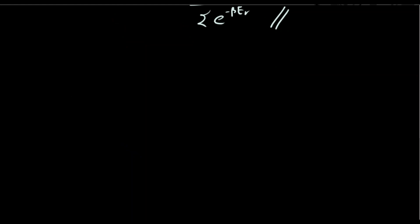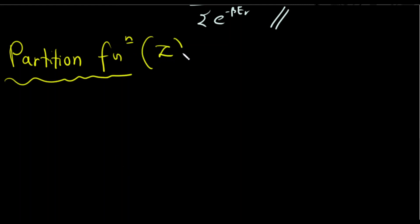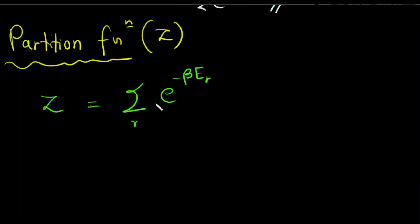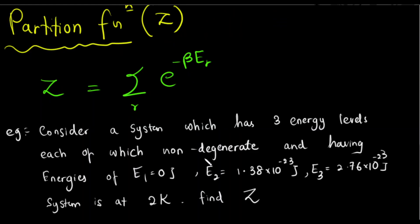We define the partition function Z as the summation of e to the power minus beta Er over all states. Now I will show you an example: consider a system which has 3 non-degenerate energy levels with energies E1, E2, E3. The system is at temperature 2K — find the partition function.